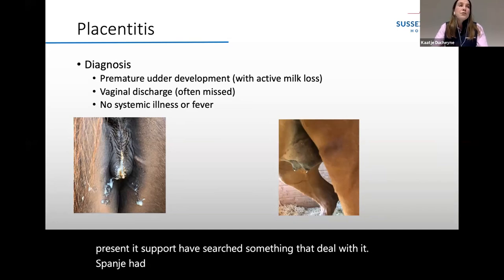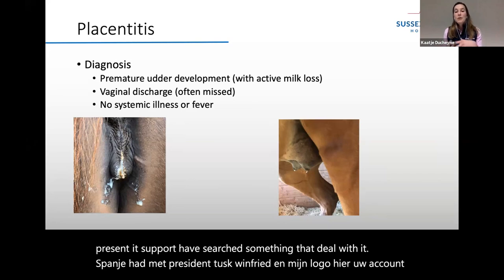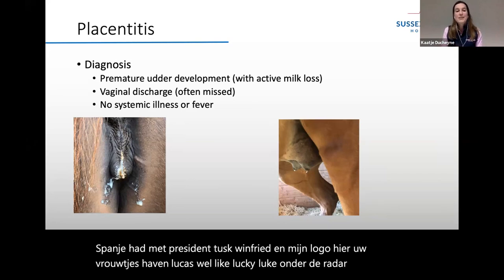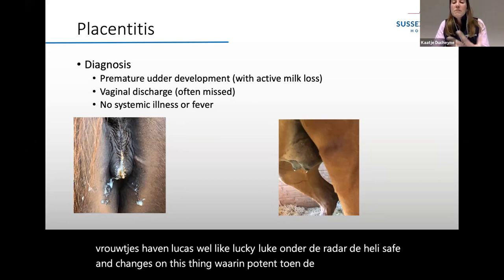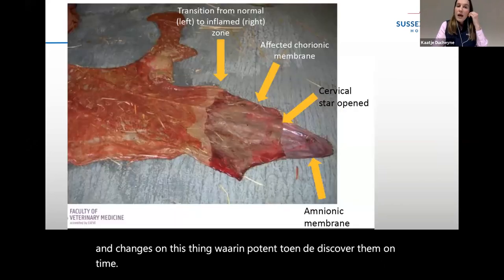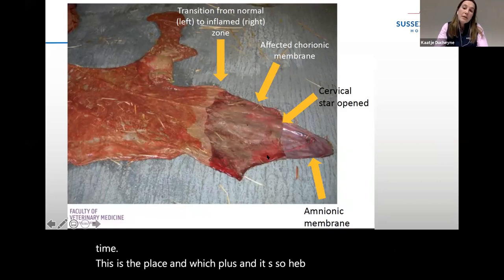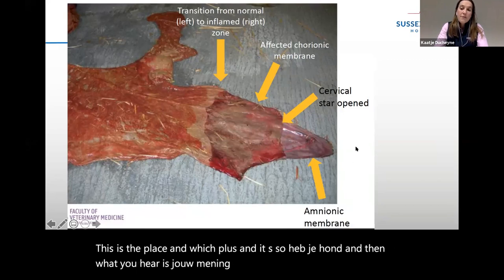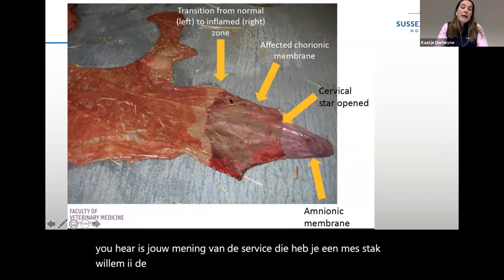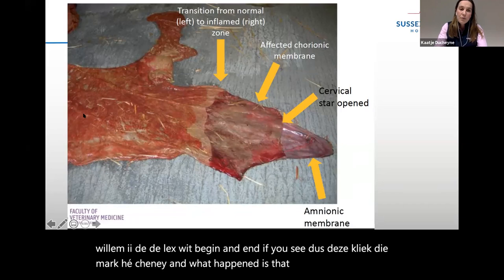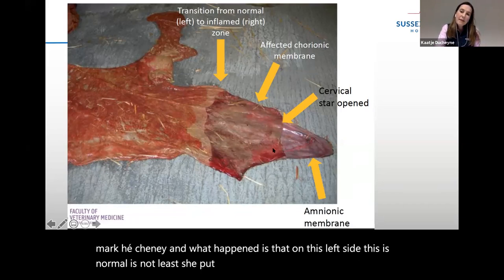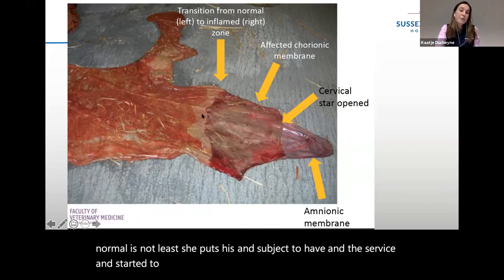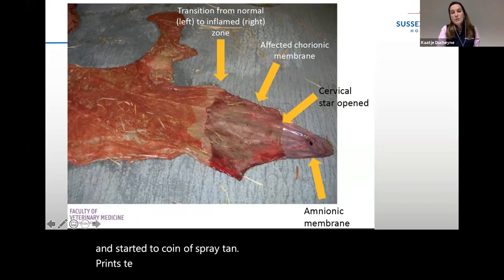With aggressive treatment, if you are on time, you can try to treat the placentitis and hopefully have the mare carry to term. Always advise owners of pregnant mares to check under the udder daily for early changes. This placenta shows a clear example of placentitis — the horns look normal on one side, but there is a clear demarcation where bacteria entered the cervix and spread inwards, meaning this area was no longer in proper contact with the uterus.